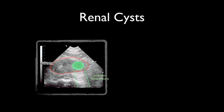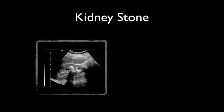Renal cysts can sometimes be mistaken for hydronephrosis. Cysts are typically single and arise in the periphery of the kidney, but can be multiple, as in polycystic kidney disease. Here's an example of kidney stones with acoustic shadowing.